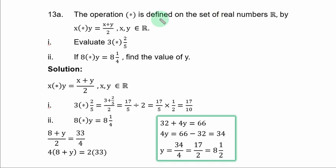Question 13a. The operation asterisk is defined on the set of real numbers by x asterisk y equals x plus y over 2, where x and y are members of the set of real numbers.